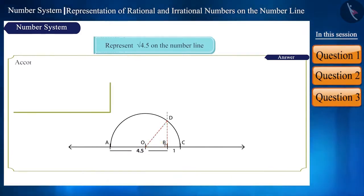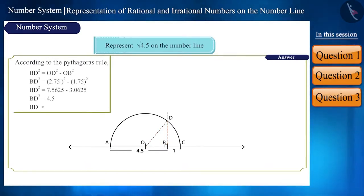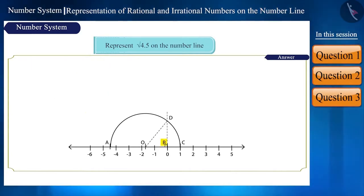In triangle OBD, on applying the Pythagoras theorem, we can find the length of BD. We will get BD as √4.5. To represent this on the number line, we consider point B as 0 and point C as 1. And by taking the radius as BD, we will draw an arc on the number line like this. This point on the number line will represent √4.5.